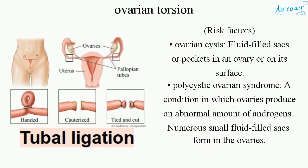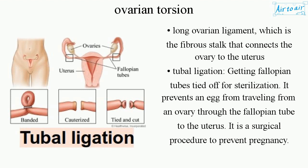Risk factors include ovarian cysts — fluid-filled sacs or pockets in an ovary or on its surface — and polycystic ovarian syndrome (PCOS), a condition in which ovaries produce an abnormal amount of androgens and numerous small fluid-filled sacs form in the ovaries. A long ovarian ligament, which is the fibrous stalk that connects the ovary to the uterus, is also a risk factor.